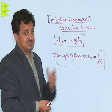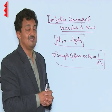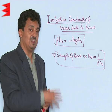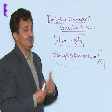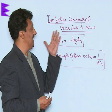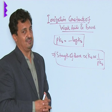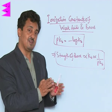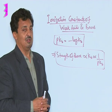This is how we interpret the meaning of Ka, Kb, pKa, and pKb, which are used in the ionization constants of weak acids and weak bases. This is also how we can compare their relative strengths.